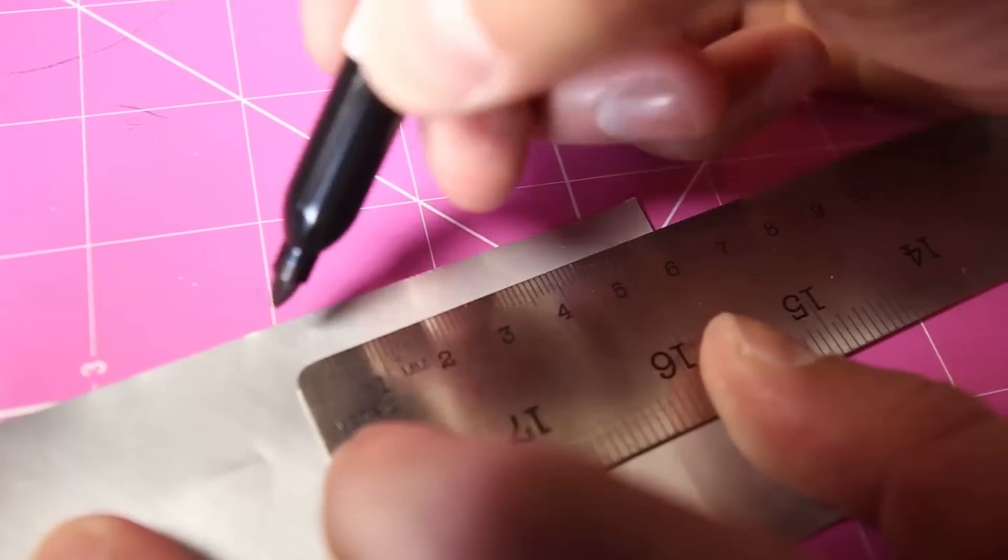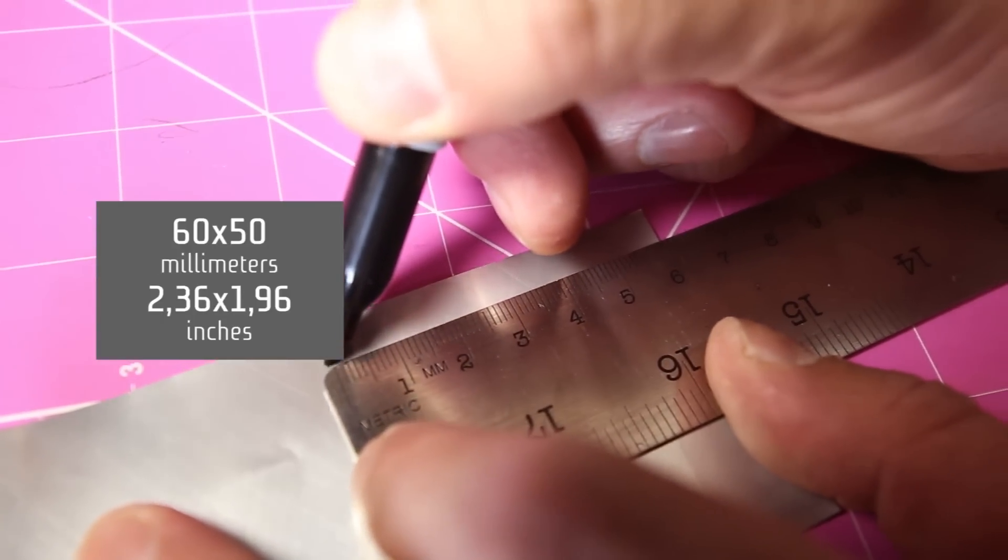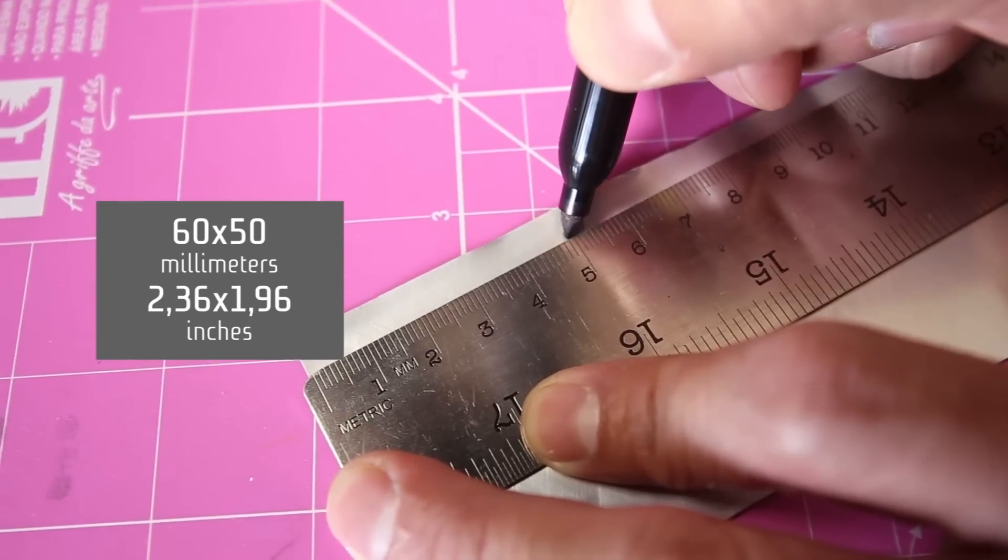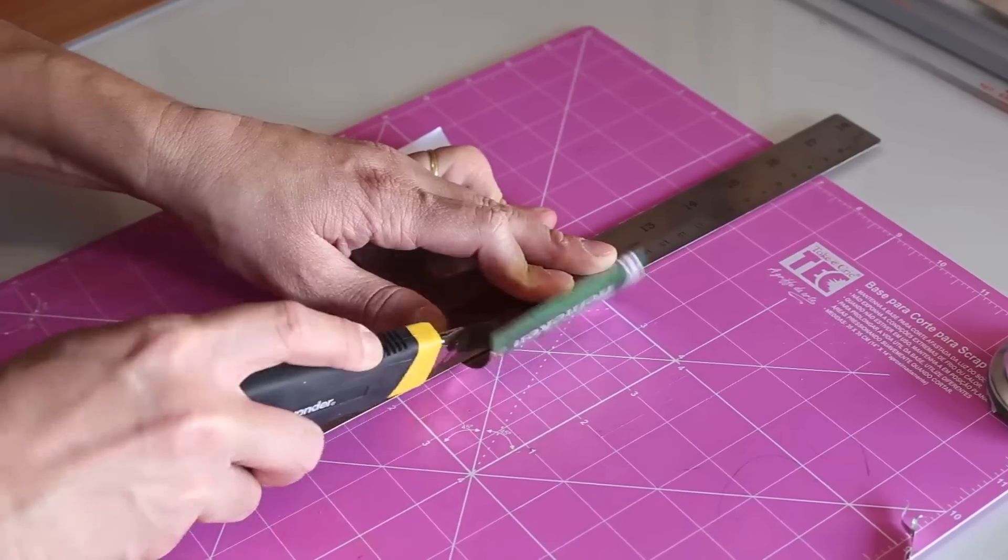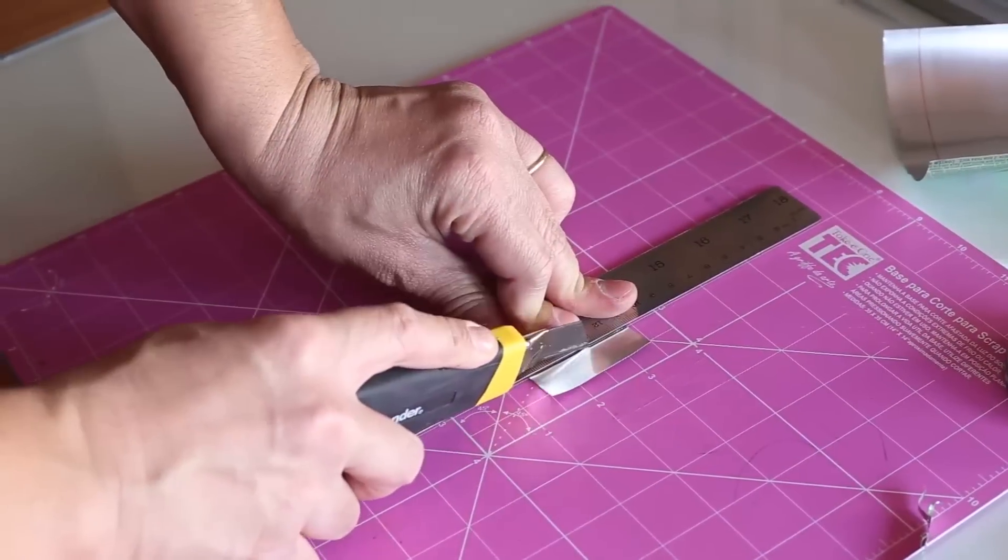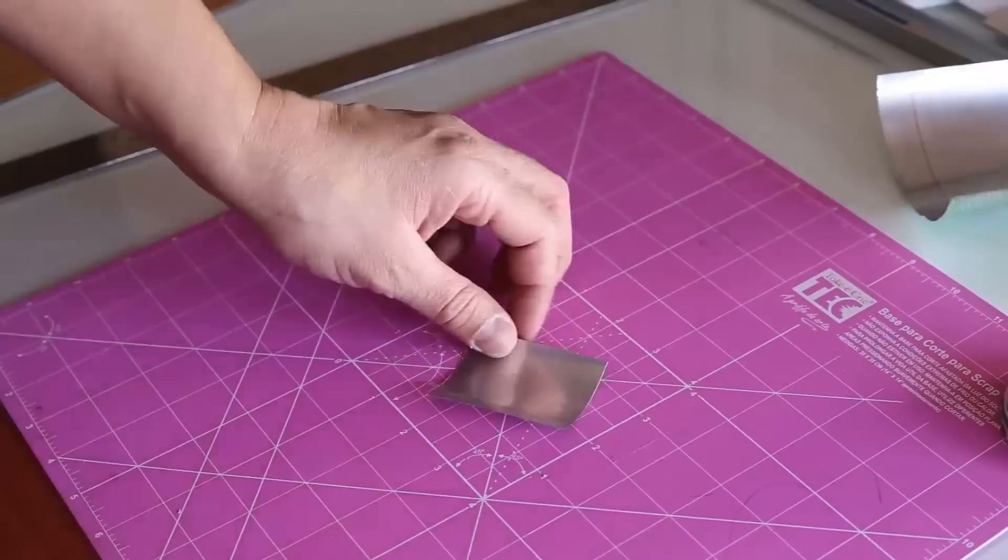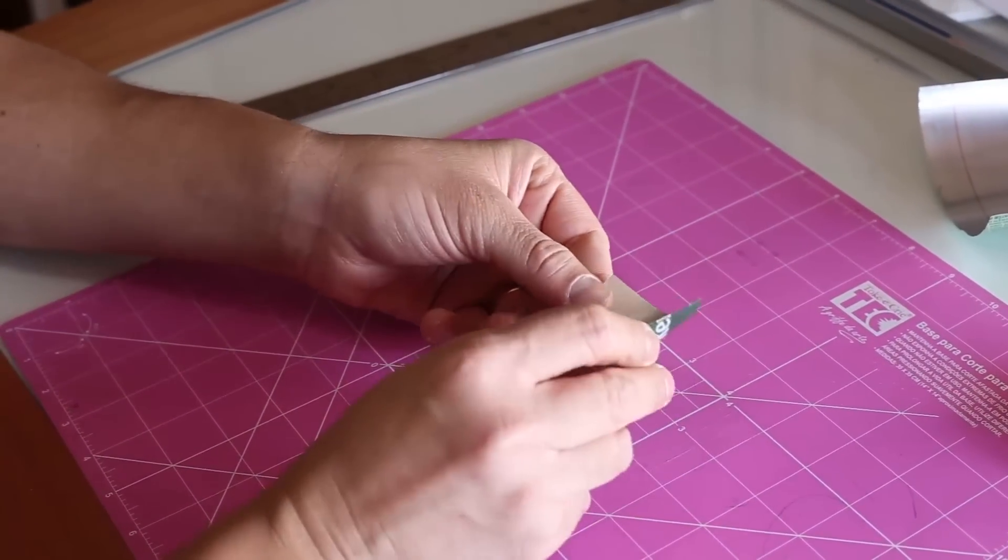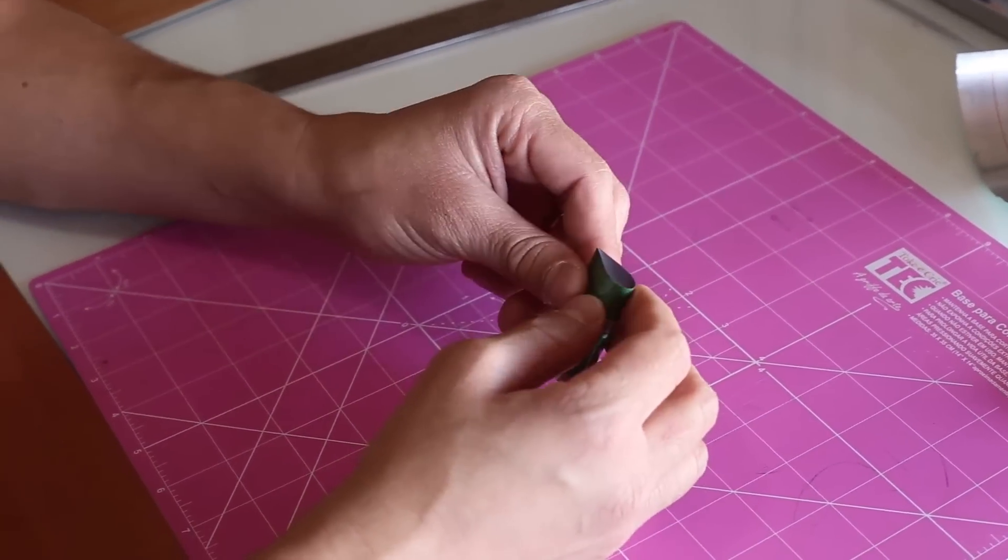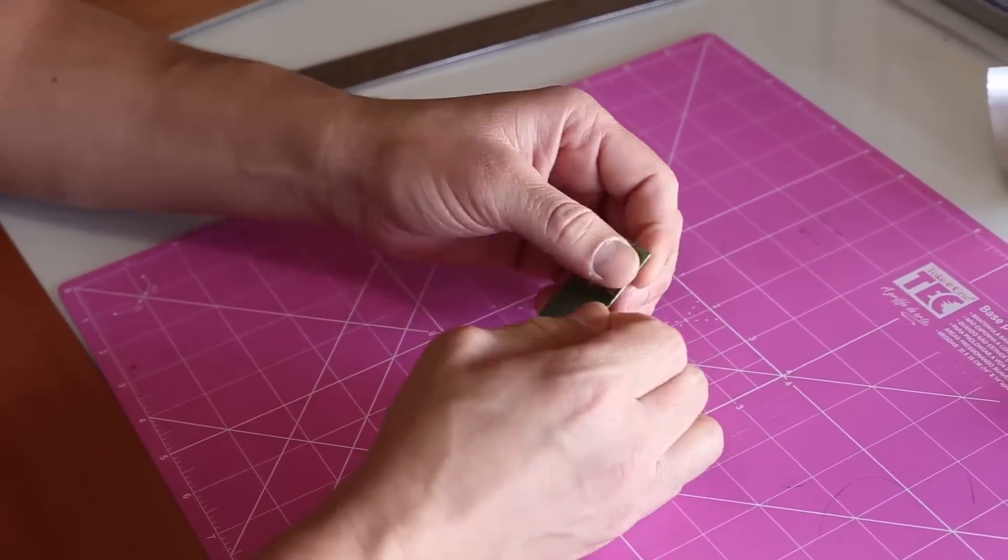Cut this aluminum sheet with 60 millimeters by 50 millimeters. Fold the sheet twice. This will become the nib for your pen.